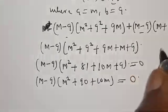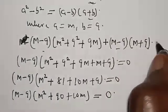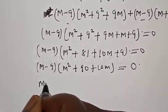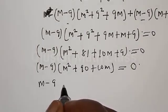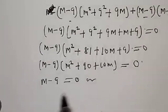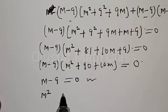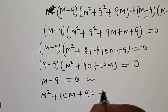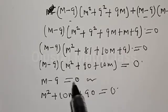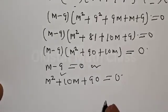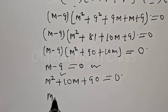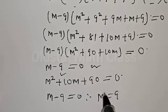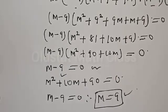Setting each factor equal to 0: M minus 9 equals 0, or M squared plus 10M plus 9 equals 0. From the first factor, M minus 9 equals 0, therefore M equals 9 for the first case.